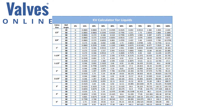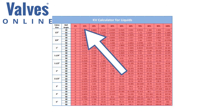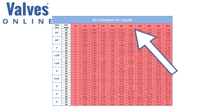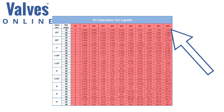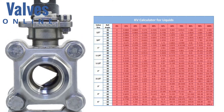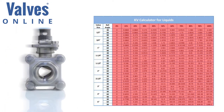The figures displayed under the percentage opening columns are calculated coefficients of flow kV, measured in cubic meters per hour of water, based on a temperature of 20 degrees Celsius with a pressure drop of 0.5 bar.